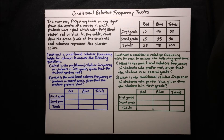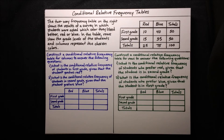In this video, we're going to learn about conditional relative frequency tables. We're told that the two-way frequency table on the right shows the results of a survey in which students were asked which color they liked better, red or blue. In the table, rows show the grade levels of the students, and columns represent the chosen colors.